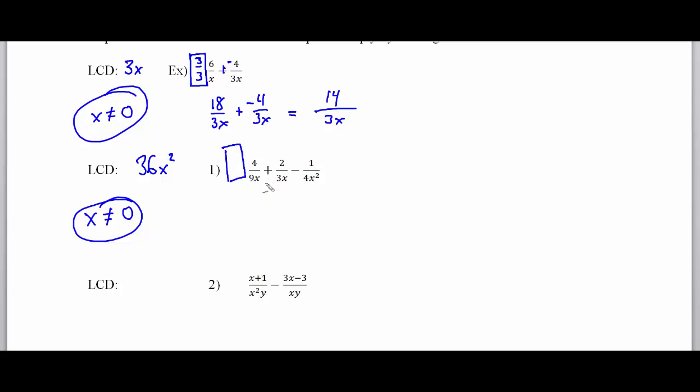So I'm going to multiply each of these by a large 1 and these rectangles represent multiplying by 1. We're going to use rectangles to represent multiplying by 1. So the first fraction of the 4 over 9x I'm going to multiply that by 4x because that would make the denominator 36x squared. And the second one I'm going to multiply the top and bottom by 12x because the 12x multiplied by the 3x would then make a 36x squared. And for this last problem I only have to multiply by 9 over 9 because that way the 4x squared becomes 36x squared.